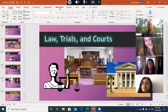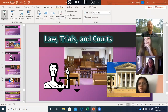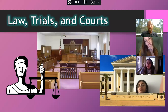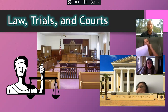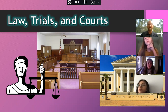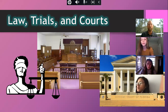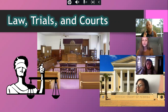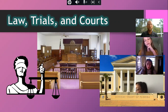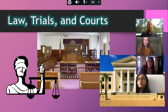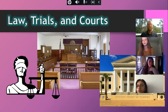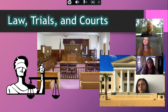The judicial branch has two main parts. Part one was Article III - we read about what the Constitution had to say about the judicial branch. Part two is law, trials, and courts. For law, we typically talk about historical sources of law, modern sources of law, and various different types of law.